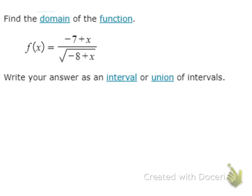Looking at another one like that: here, we do have a variable in the numerator, but since there's no radical and it's not a fraction in the numerator, we don't have to pay any attention to that variable at all. In the denominator, we have the radical. When the radical is in the denominator, the argument has to be greater than 0 — not greater than or equal to 0 — because we can't have a 0 in the denominator. So x has to be greater than 8, and my interval would be 8 to infinity.